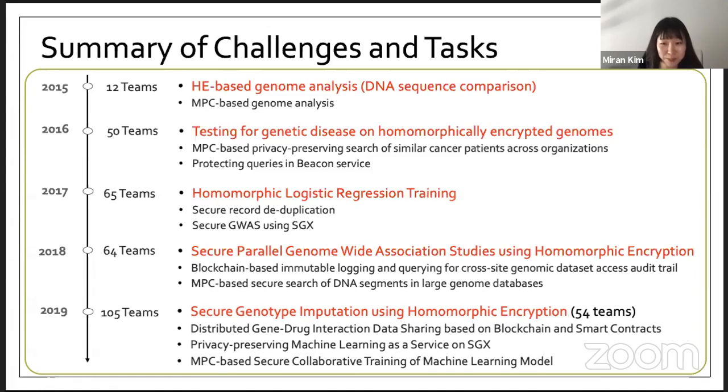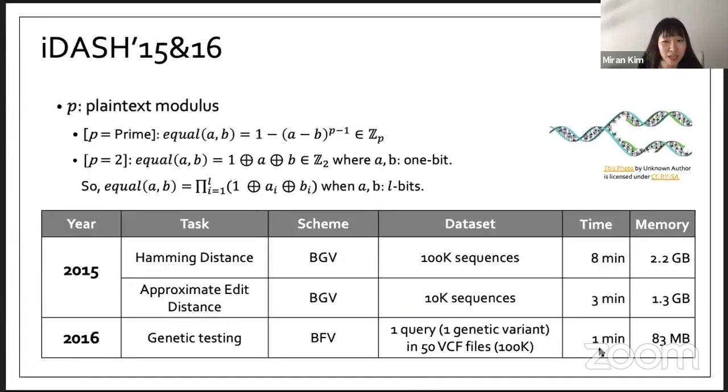In this talk I will explain how different HE schemes systems were used and optimized to solve these particular problems. The task of 2015 was to compute Hamming distance and approximate edit distance, so we can securely obtain the similarity of two DNA strings. On each DNA variant, we need to check if two alleles are equal or not. The efficiency was determined by how to express the equality circuit.